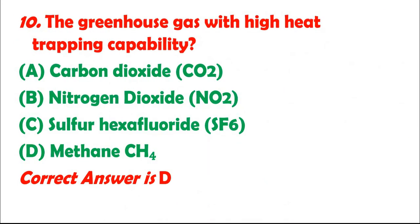Question 10: The greenhouse gas with high heat trapping capability: A. Carbon dioxide (CO2). B. Nitrogen dioxide (NO2). C. Sulfur hexafluoride (SF6). D. Methane (CH4). Correct answer is D.